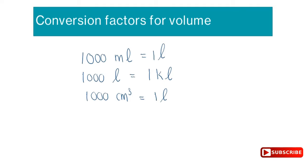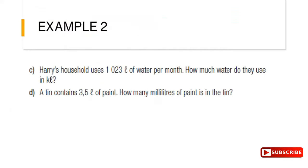Now let's look at conversion factors for volume. Remember: 1000 milliliters equals 1 liter; 1000 liters equals 1 kiloliter; and 1000 cubic centimeters equals 1 liter — that last one is a favorite in exams. Memorize these conversion factors so they're ready when you need them.